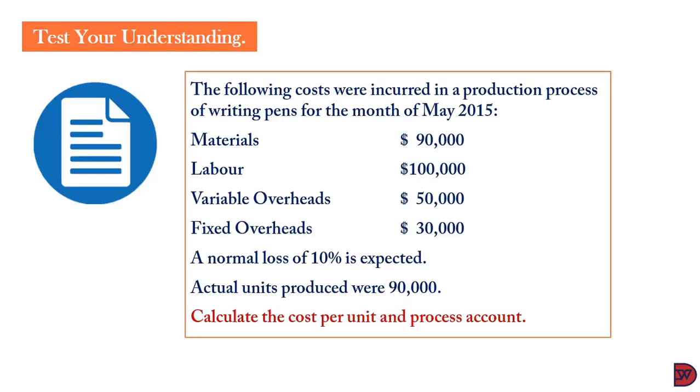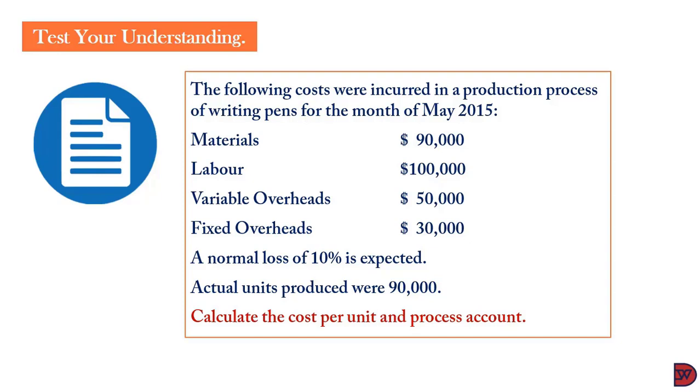Let's quickly test our understanding. The following costs were incurred in the production process of writing pens for the month of May 2015. Materials were $90,000, labor $100,000, variable overheads $50,000, fixed overheads $30,000. A normal loss of 10% is expected. Actual units produced were 90,000. Calculate the cost per unit and the process account.